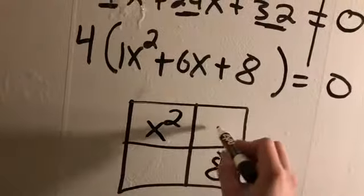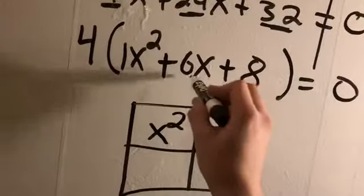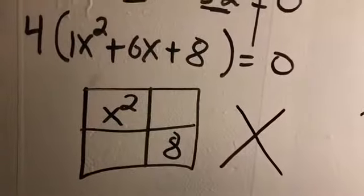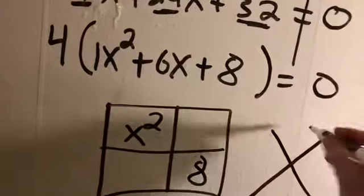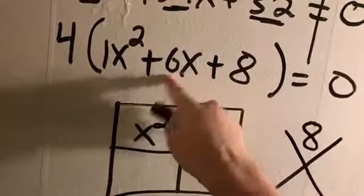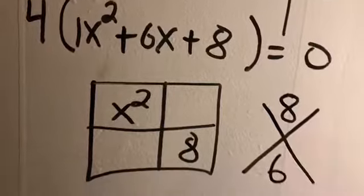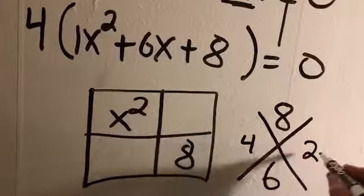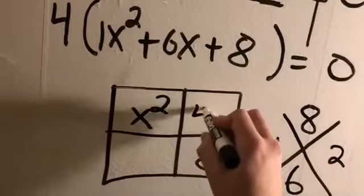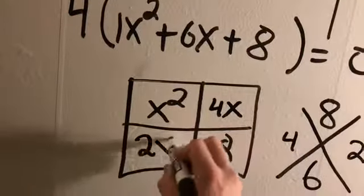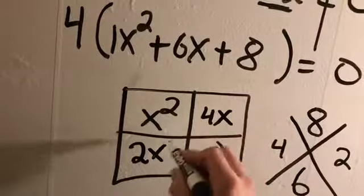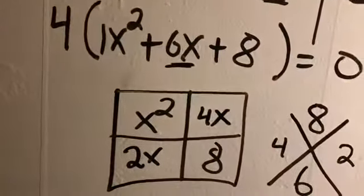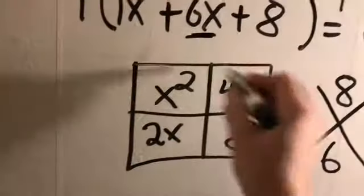Now we have to figure out how to create our two boxes from that 6x. So we'll use our little diamond puzzle. So we'll ask ourselves, what multiplies to that last number, and adds or subtracts to our middle number. I know 4 × 2 is 8. 4 + 2 is 6. So I know that these became the 4x and 2x. Because remember, if you did this correctly, they should combine back to that 6x. So now we can start factoring.